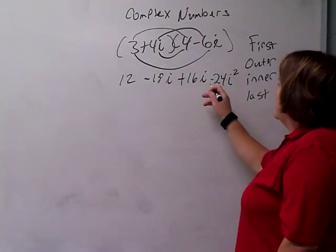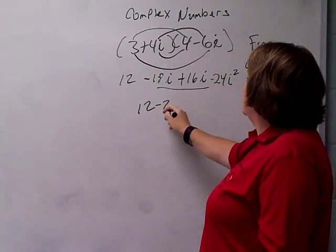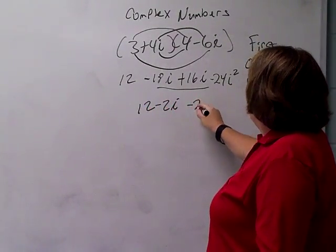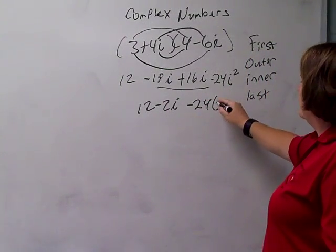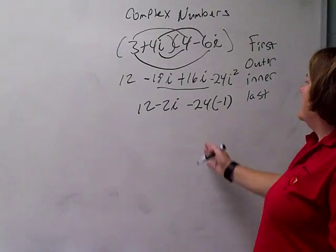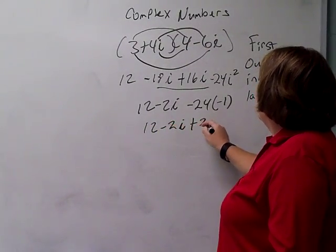Okay, you can simplify that middle part there. Negative 18i plus 16i is negative 2i. And then here, i squared is the same as negative 1, so that's negative 24 times negative 1. Negative 24 times negative 1 turns out to be plus 24.